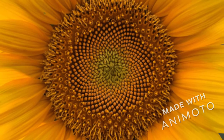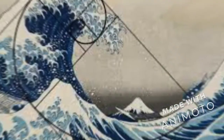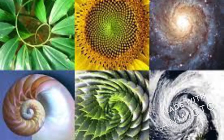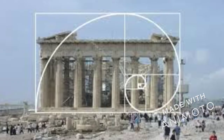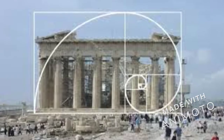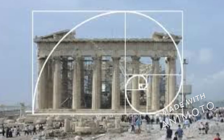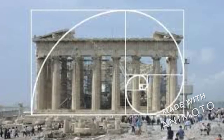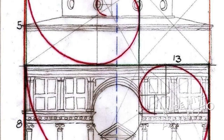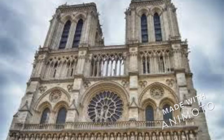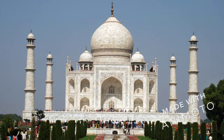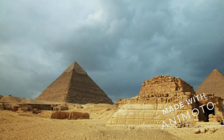We can see the golden ratio in nature, including seashells like the Nautilus, flowers, kinds of animals, even in human anatomy. The golden spiral is also applied in art and architecture. Examples of architecture are the Parthenon, Notre Dame, Taj Mahal, the Great Pyramid of Giza, and the Guggenheim Museum.